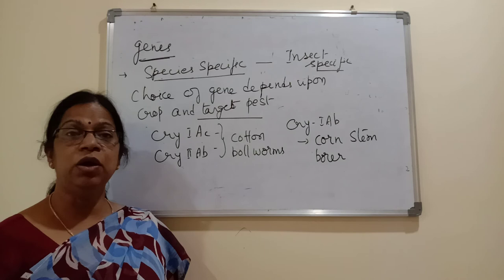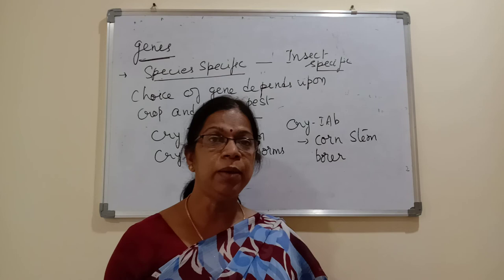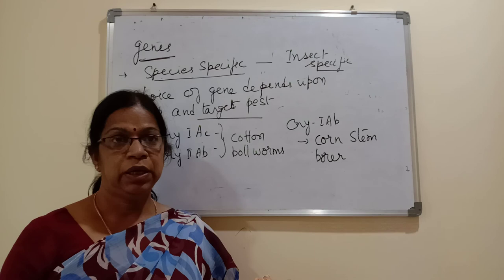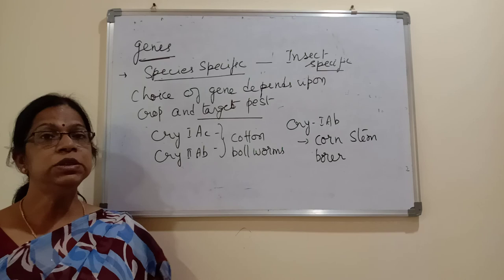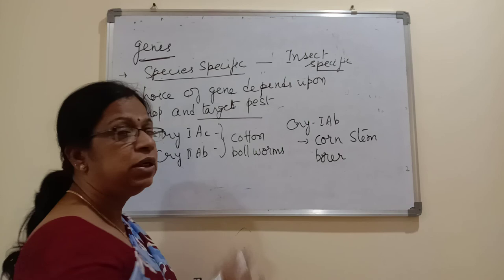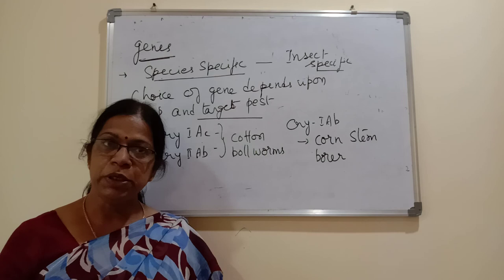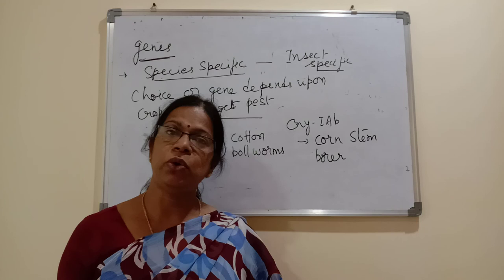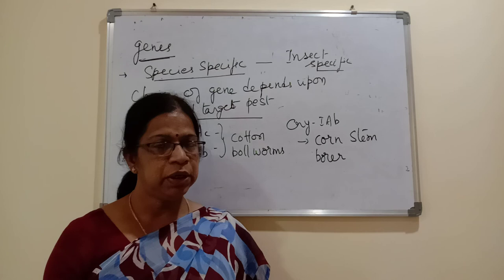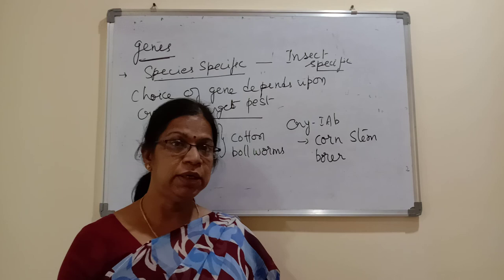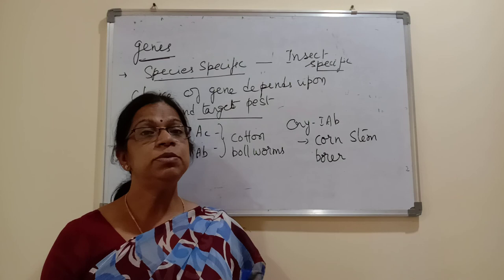A very commonly asked exam question is how the protoxin becomes active — the answer is: due to the alkaline pH of the gut. Another common question is about the cry genes. That completes this topic. In the next session I will discuss examples of transgenic plants and their unique features. Thank you very much, have a good day, and please subscribe and share the channel.